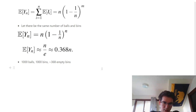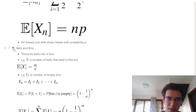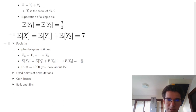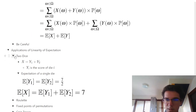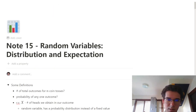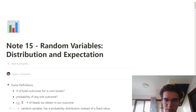That was a lot — hopefully you got a good understanding of the definition of random variables, what distribution is, and what expectation is. That has been Note 15 for CS70.